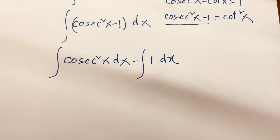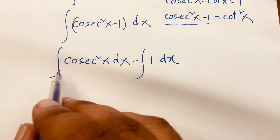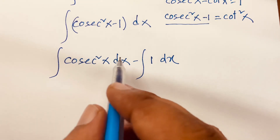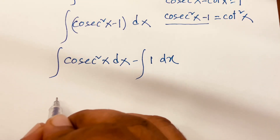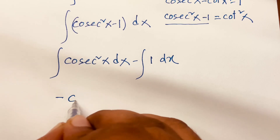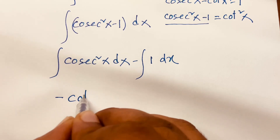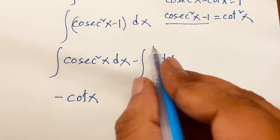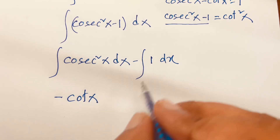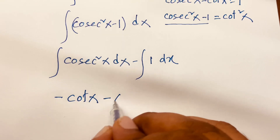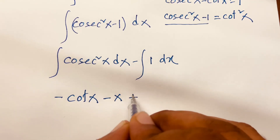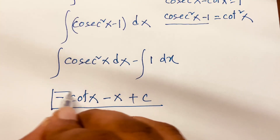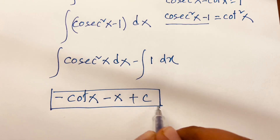We know that integral of cosec square x it will be minus cot x, and minus integral of dx it will be minus x, plus c. This is our final answer.